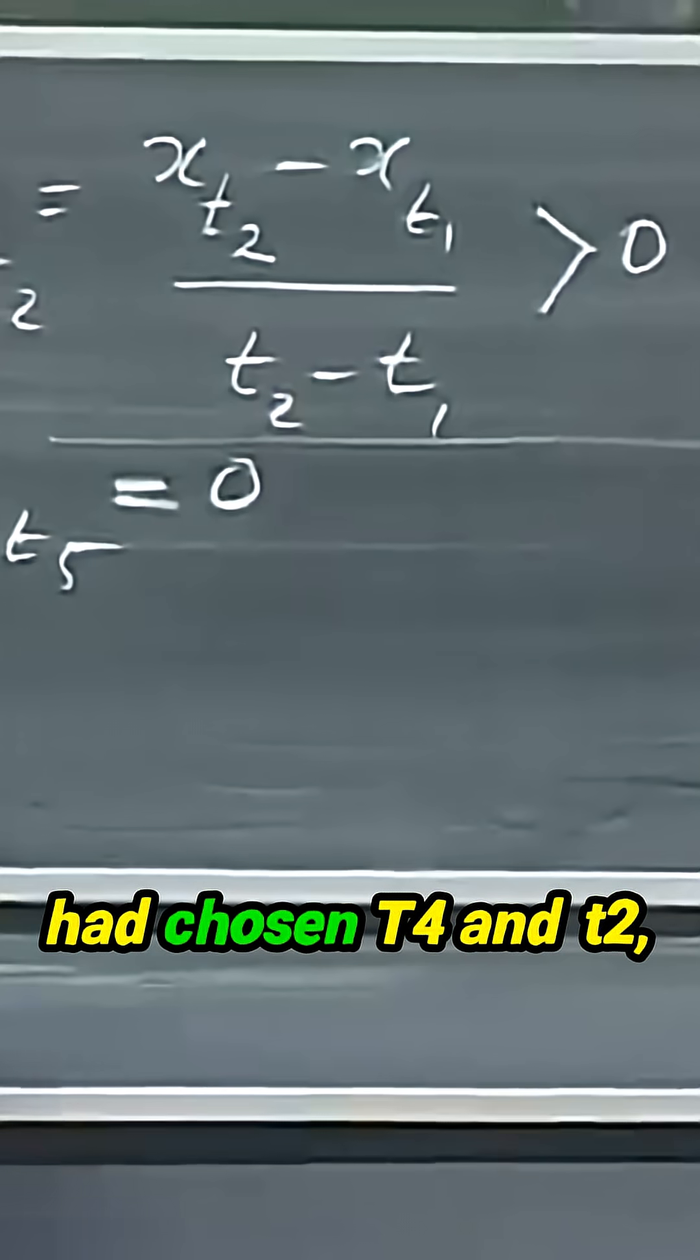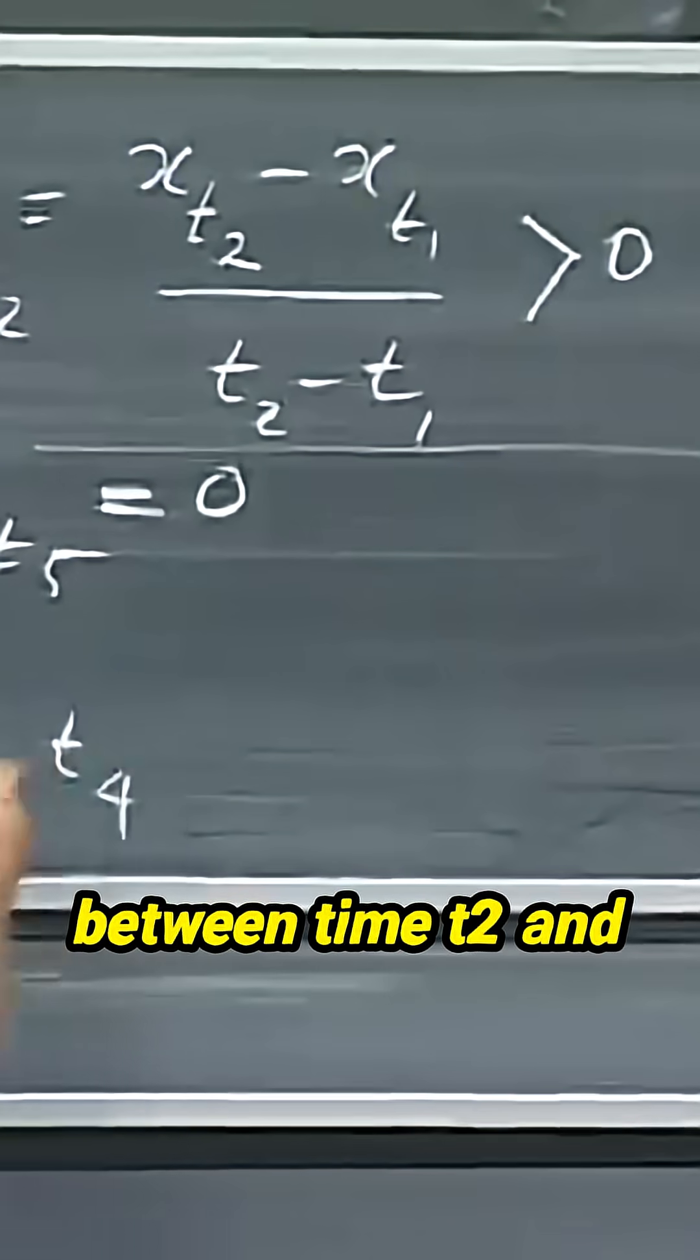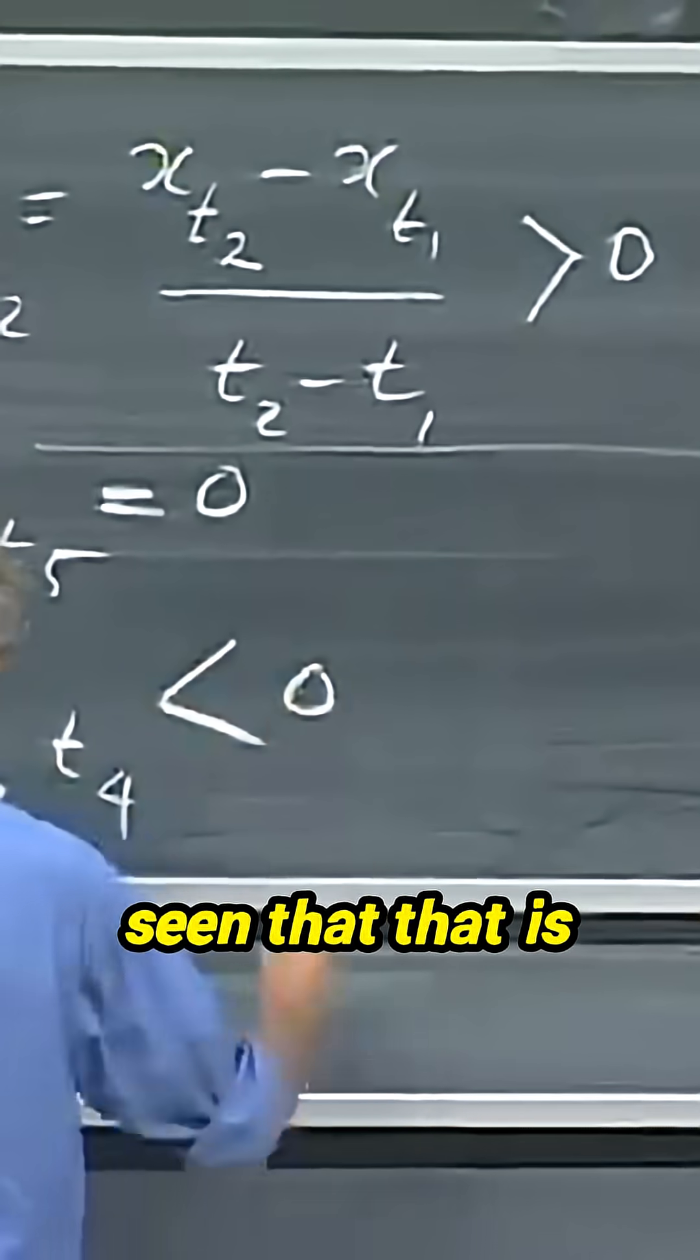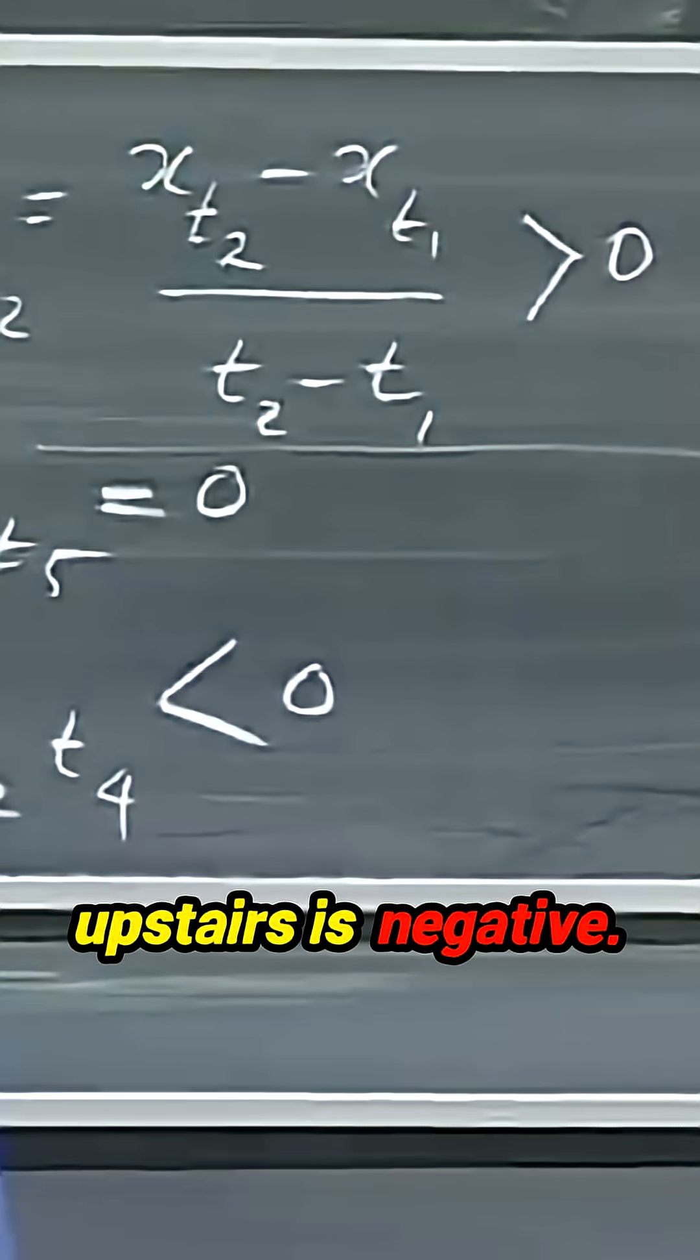If I had chosen t4 and t2, average velocity between time t2 and t4, you would have seen that that is negative because the upstairs is negative.